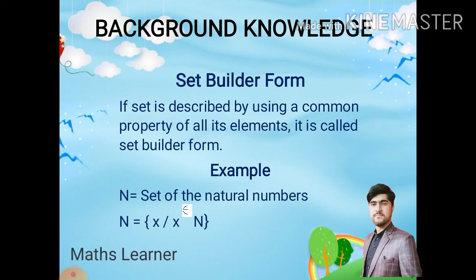For example, we have a set N, a set of natural numbers. So how do we convert to set builder form? N is a set which consists of elements such that x belongs to N. In this set, the x element is present. After such that, we basically use the property of the elements. The property is x belong to N, that x is related to N.